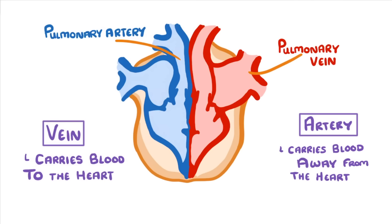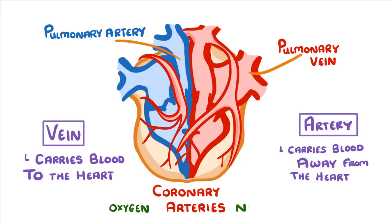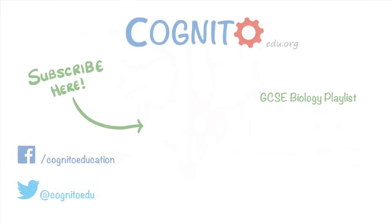One last thing before we finish is that the heart also needs its own supply of oxygenated blood, and it gets this from small arteries that branch off the aorta called coronary arteries. These vessels encircle the heart to make sure that the muscle tissue gets all of the oxygen and nutrients that it needs. And that's everything you need to know about the heart. If you found it useful then please do share it with your friends and we'll see you next time.